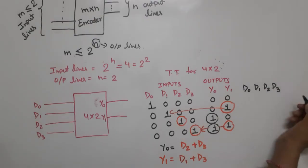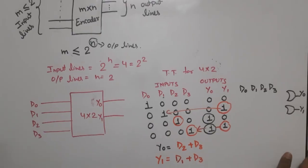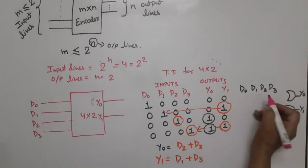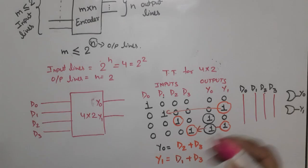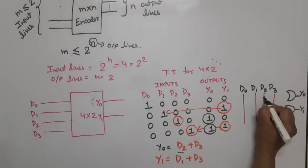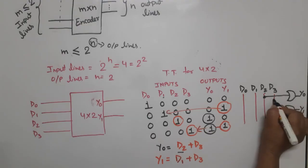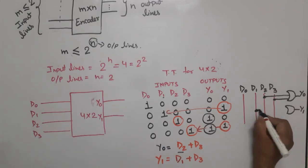Y0 inputs are D2 and D3, so Y0 = D2 + D3. For Y1, the inputs are D1 + D3. So this is the logic diagram.